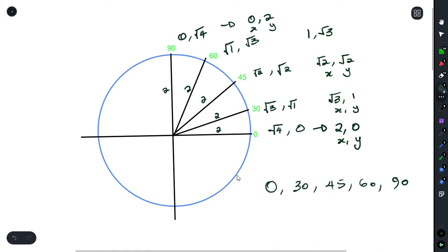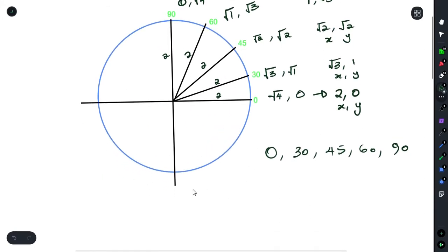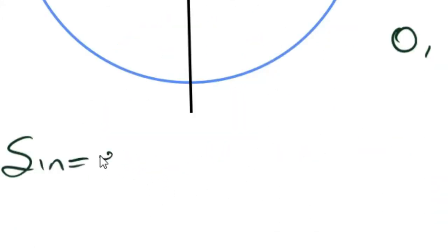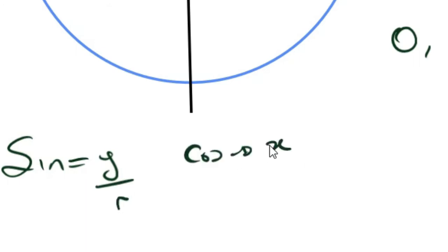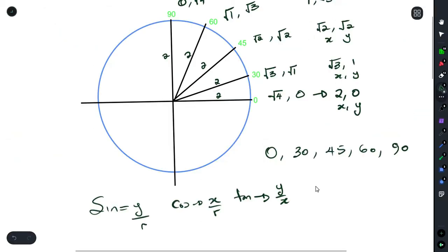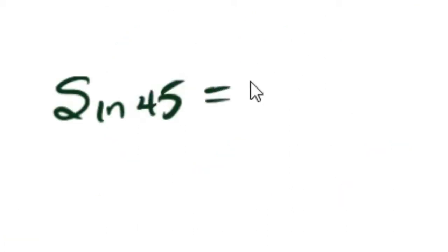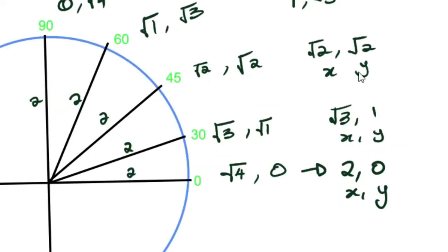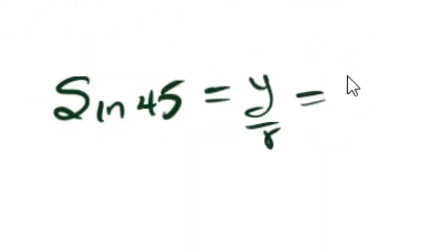To get the special angles, recall that sine is y over r, cos is x over r, and tan is y over x. So if I want to figure out sine 45, I understand that sine 45 is y over r. It would be root 2 over r, which is 2, and you get root 2 over 2.